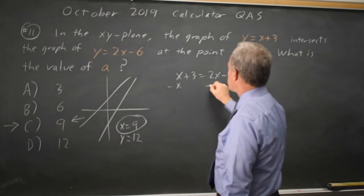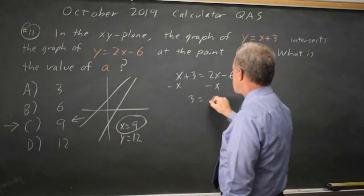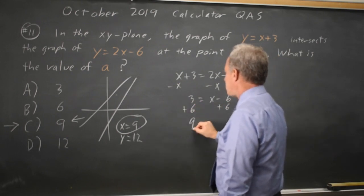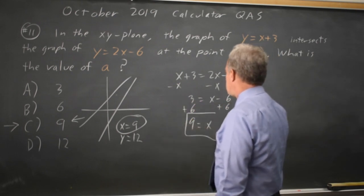If I subtract x from both sides, I get 3 equals x minus 6. Add 6 to both sides, and I get 9 equals x. Same answer.